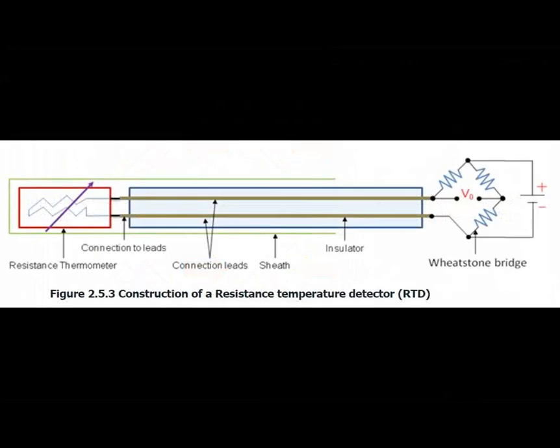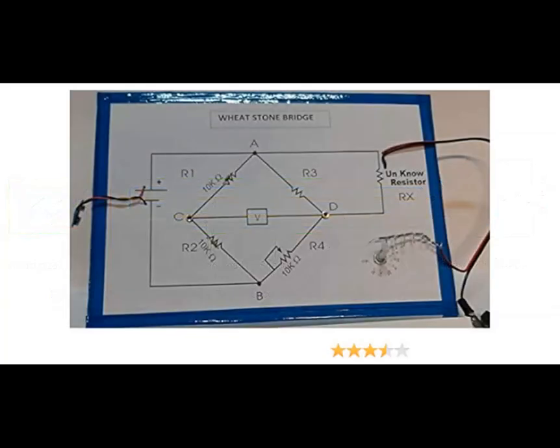Overall, the Wheatstone Bridge Circuit provides a simple yet effective method for accurately measuring unknown resistances by comparing them to known resistances in a balanced configuration. It's a foundational concept in electrical measurement and instrumentation.